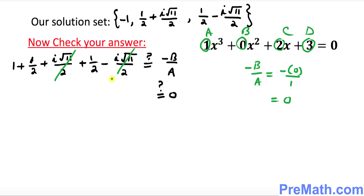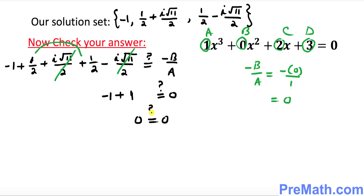On the left-hand side, the imaginary terms cancel each other out, and 1/2 plus 1/2 makes 1. I also want to note I made a mistake earlier — this should be negative 1, not positive 1. So negative 1 plus 1/2 plus 1/2 equals 0. The left-hand side equals 0 and the right-hand side equals 0 — they match, confirming our solution. Thanks for watching, please subscribe for more videos.